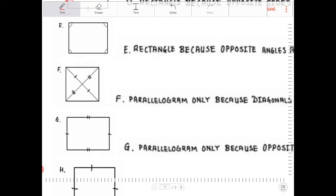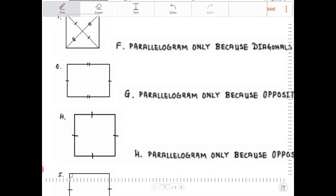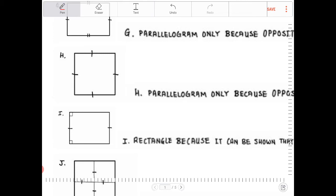Letter F: the diagonals are bisecting one another, but it does not suggest that the diagonals are congruent, so therefore this is only a parallelogram. Letter G is a parallelogram only, because we only know about the opposite sides being congruent — we don't know anything about the diagonals or the angles. Letter H is only a parallelogram because opposite sides are congruent; we do not know anything about the diagonals or the angle measures.